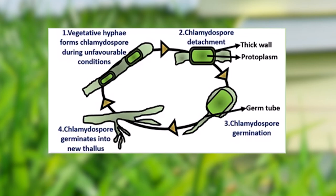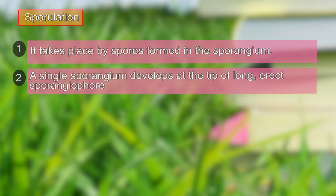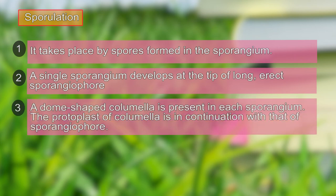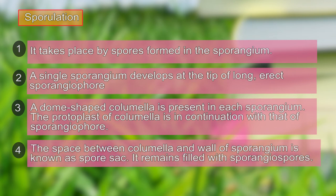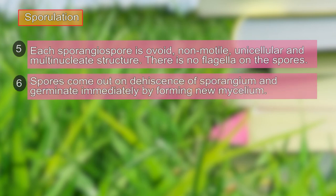The method of sporulation is another asexual method of reproduction. It takes place by formation of spores inside the sporangium. A single sporangium develops at the tip of the long erect sporangiophore, and a dome-shaped columella is present inside. The space between the columella and the sporangium wall — the spore sac — remains filled with spores. Each spore is ovoid, non-motile, unicellular, and multinucleate with no flagella. When the sporangium bursts, spores are dispersed by wind and germinate on a suitable substrate.